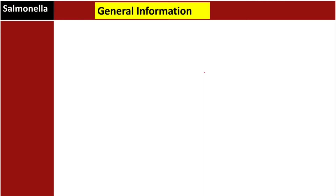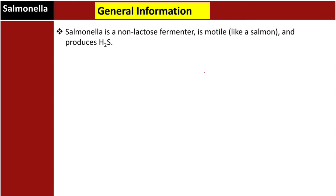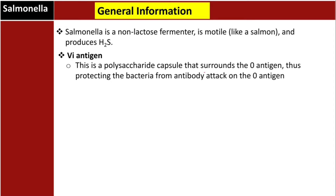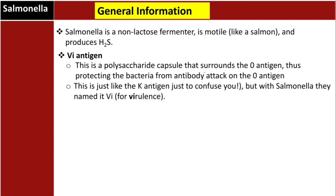Some general information: Salmonella is a non-lactose fermenter and is motile — like a salmon fish, it moves. It produces hydrogen sulfide. Regarding antigens, the Vi antigen is a polysaccharide capsule that surrounds and protects the O antigen from antibody attack — similar to the K antigen in other organisms. Vi stands for virulence.